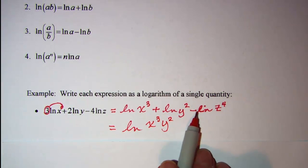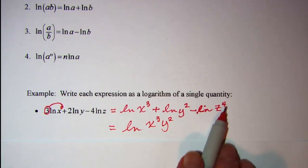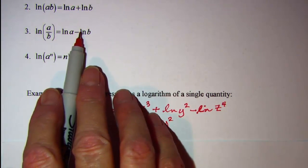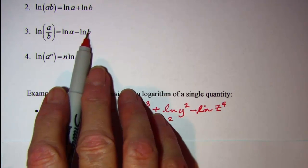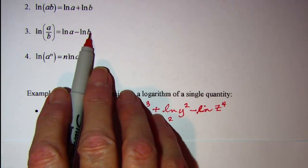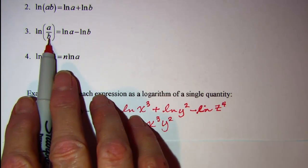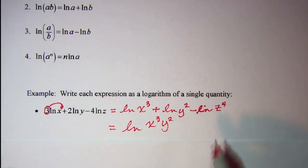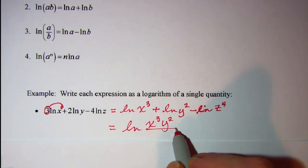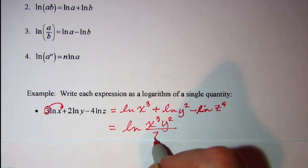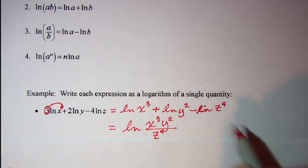And then, because this is minus lnz to the 4th, when you have a minus ln of some argument, that argument is in the denominator. So divided by z to the 4th. So now I have a logarithm of a single quantity.